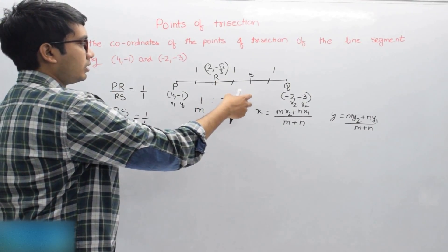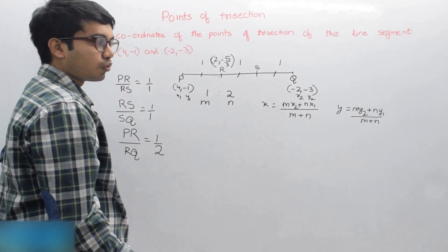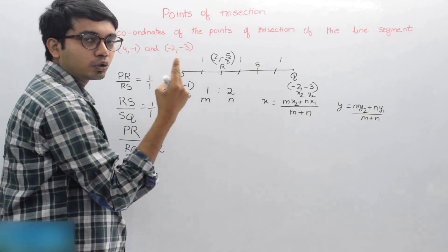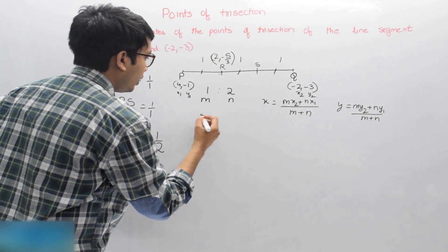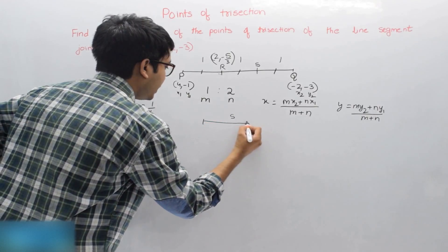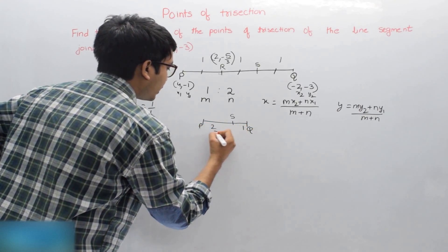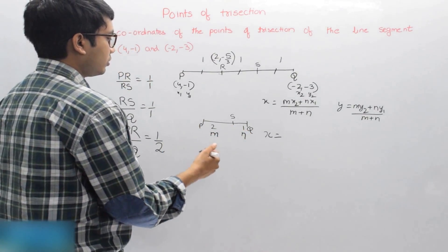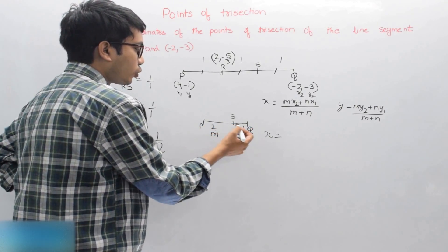S divides PQ in the ratio 2:1, because PS is two parts and SQ is one part. So S divides PQ in the ratio 2:1, meaning M will be 2 and N will be 1.